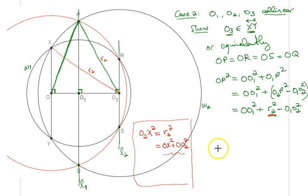Now I can substitute this expression into here. So I have OO1 squared plus this expression here, which is OX squared, OX squared plus OO2 squared, and I still have this minus O1O2 squared.